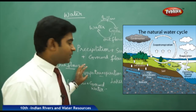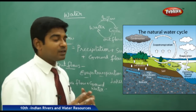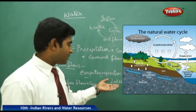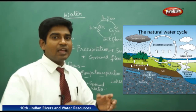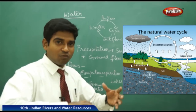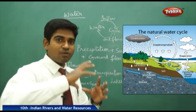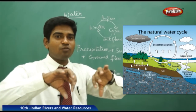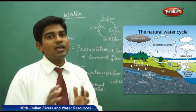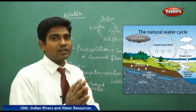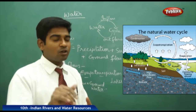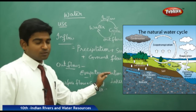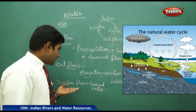Now coming to the outflow — outflow has two parts: evaporation and transpiration. When evaporation and transpiration happen together, it is called evapotranspiration. Evaporation occurs directly from lakes, rivers, and seas. When water is transported in the form of rivers moving from one place to another, it gets diverted and the quantity of water gets reduced, causing water content to decrease at various levels. This combined process is called evapotranspiration.